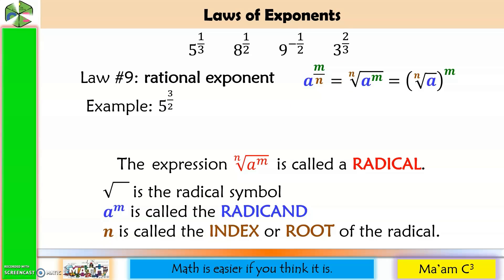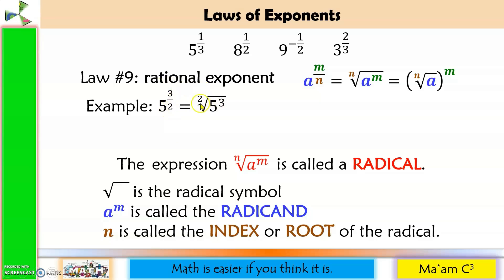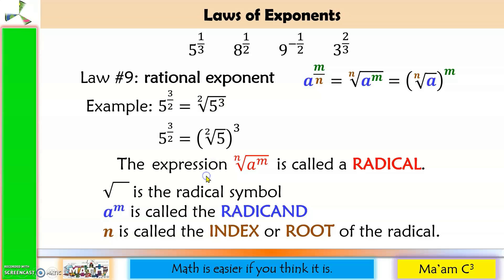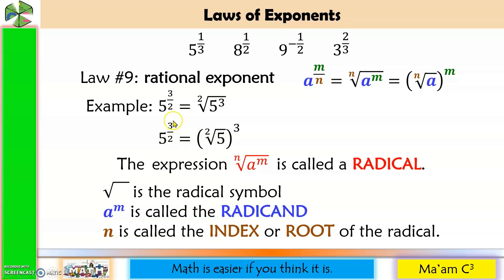Example: 5 raised to 3 over 2. This can be expressed as the square root of 5 cubed. The numerator becomes the exponent, and the denominator becomes the index or root of the radical. Or, 5 raised to 3 over 2 can also be expressed as the quantity of the square root of 5, raised to the third power. The denominator still becomes the index or root, while the numerator becomes the exponent.